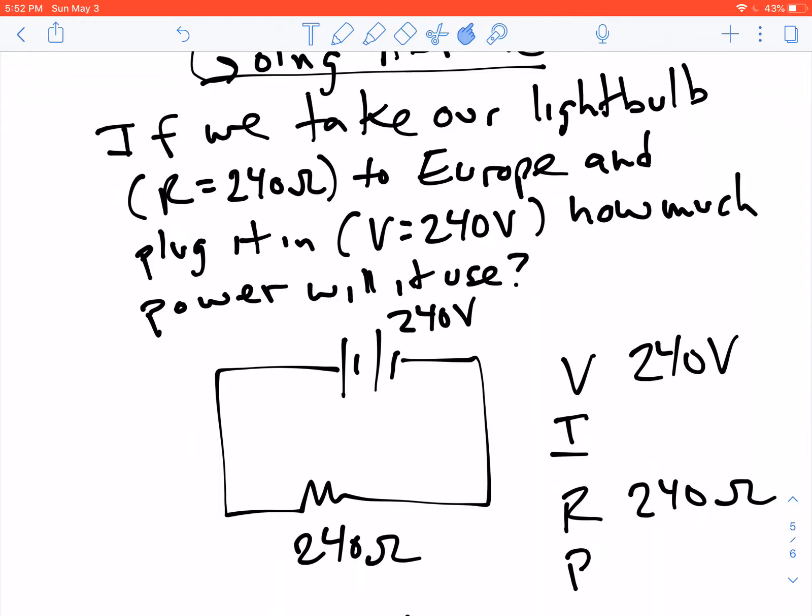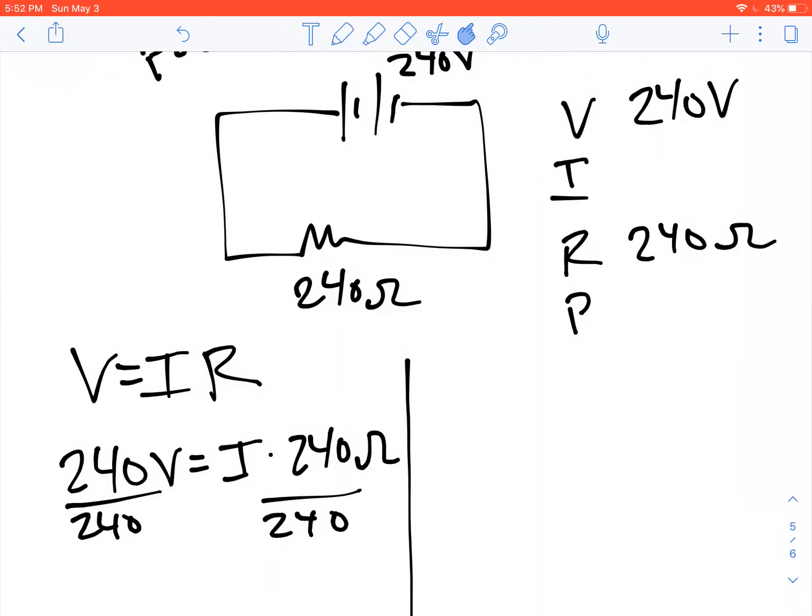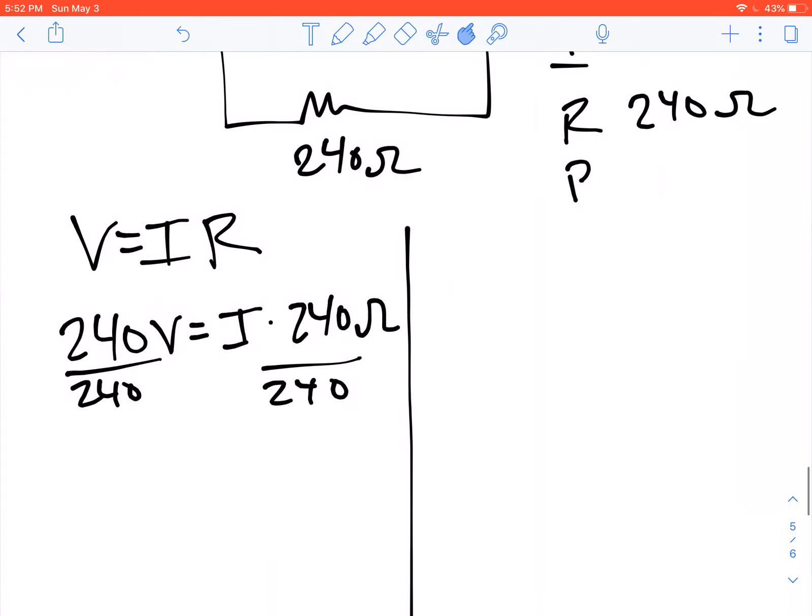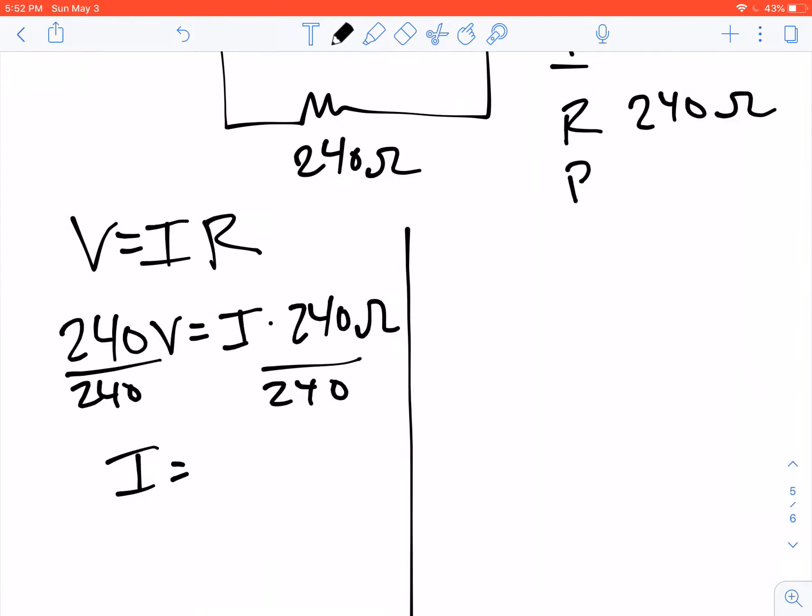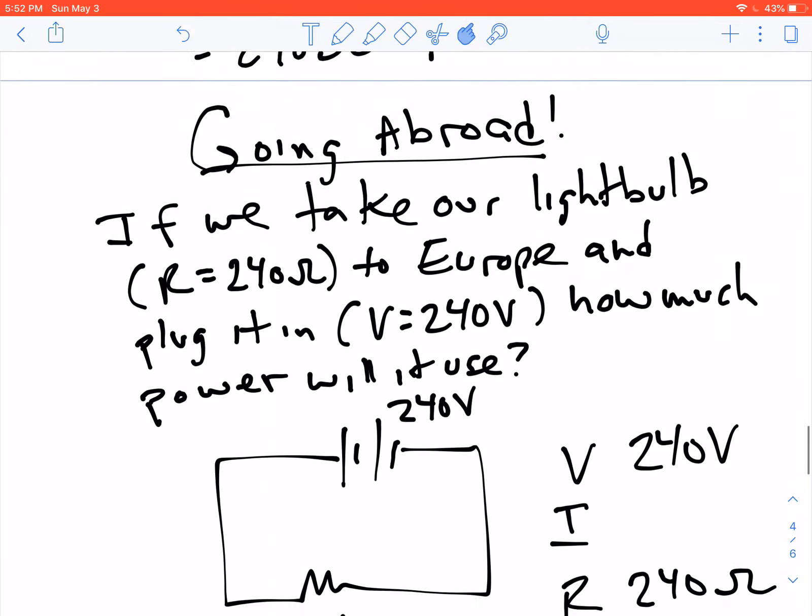And the first thing we're going to try to do is we're going to try to calculate the current that flows through it. So we'll do V equals IR. We have 240 volts equals I times 240 ohms. And so we divide both sides by 240, and we get I equals 1 amp. You'll recall that in the previous problem, where we were connecting it to 120 volts, we only had half of an amp flowing through it.